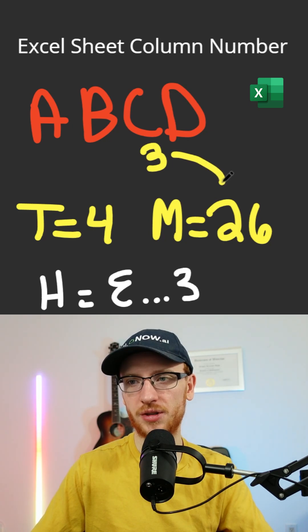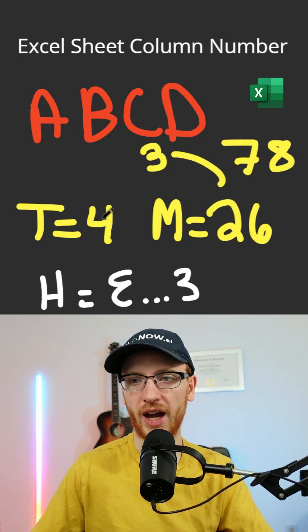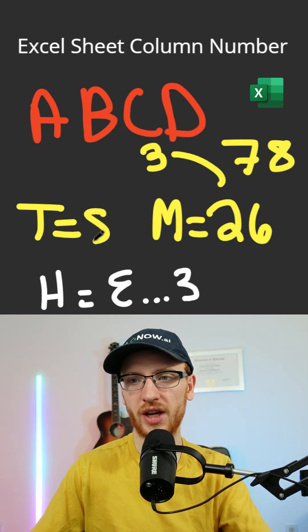From C we get 3, we multiply together to get 78, we add that to our total, and so now we have 82.